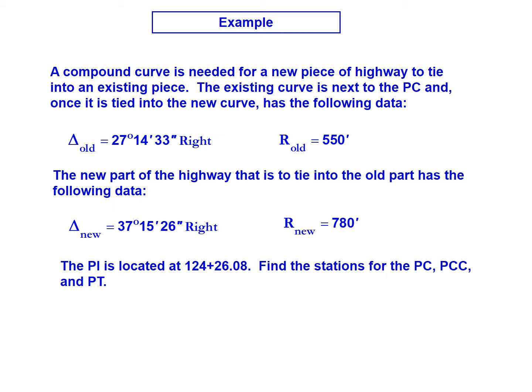The deflection for the existing curve is 27 degrees 14 minutes 33 seconds, and that's a curve towards the right. The existing curve's radius is 550 feet.